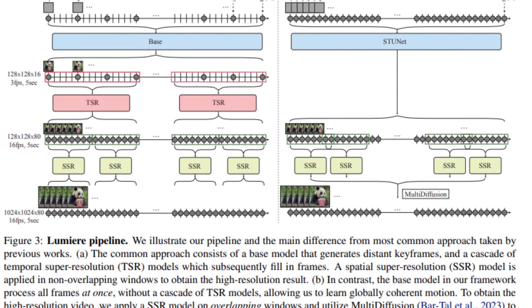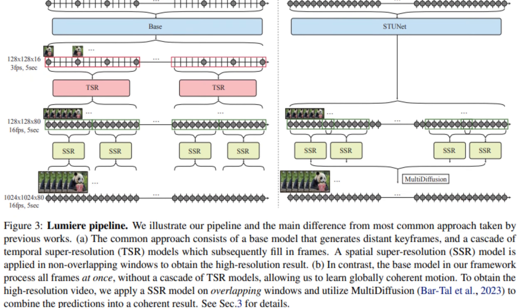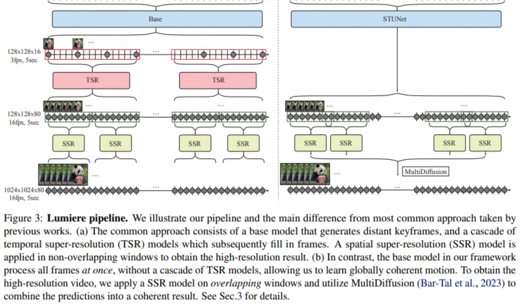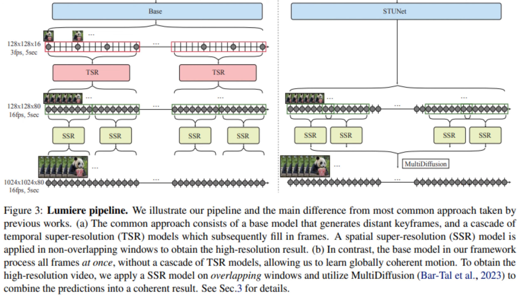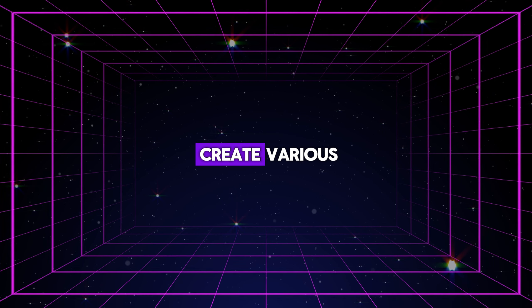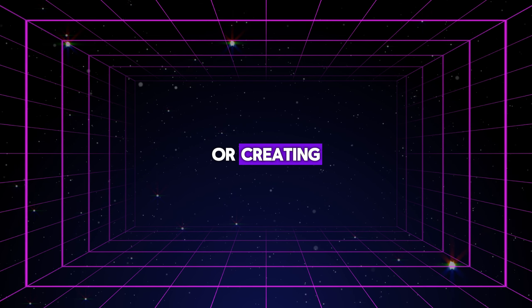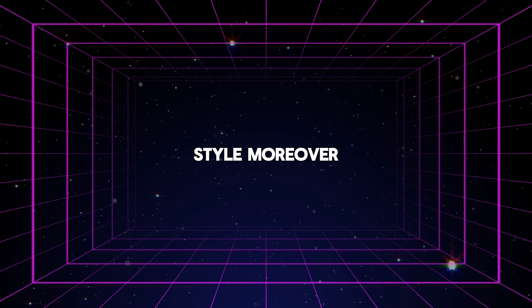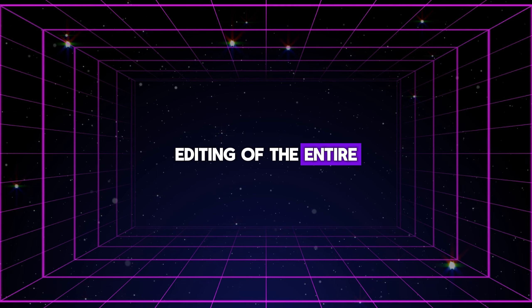The Space-Time Unit is built on top of a pre-trained model that is already good at creating images from text. However, since it works at a very detailed level, using it for the full length of a video can be difficult due to memory limits. To solve this, a method called multi-diffusion is used to merge the high-detail parts of the video smoothly over time, making the final video look consistent throughout. With this new approach, it's now easier to create various types of video content, such as editing parts of a video, turning an image into a video, or creating videos that follow a specific artistic style. Moreover, this method allows for consistent and uniform editing of the entire video at once.